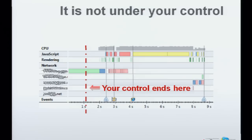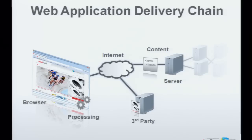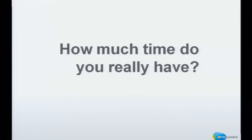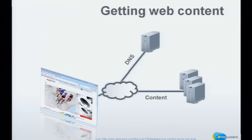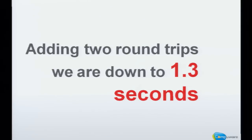Now you might think 1.6 seconds is a lot of time — for a computer it is. The problem, however, is that it is not under our control. As you see in this example, only a very small portion of the whole delivery of a web page is really under our control. If you look at the web application delivery chain, there are a lot of factors: the internet, third-party content on our page, and all the processing that goes on in the browser. So how much time do we really have? First, we have to get web content — resolving the DNS address and requesting the content. Even with a very fast network, these two round trips easily make up 300 milliseconds.